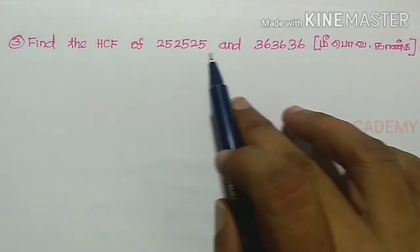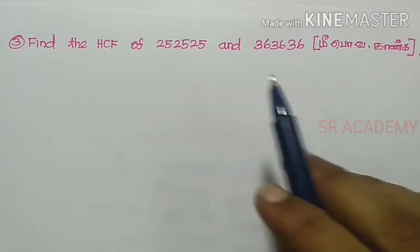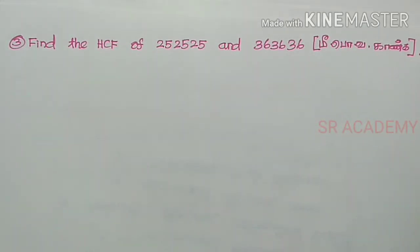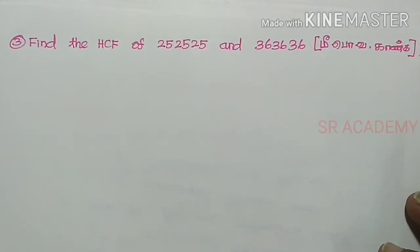We have 2 numbers. We need to find the HCF of these two numbers. We will use the prime factorization method, which is easier.